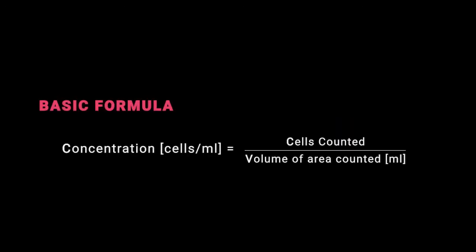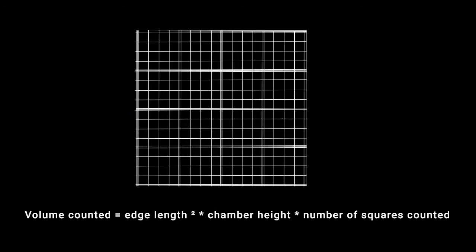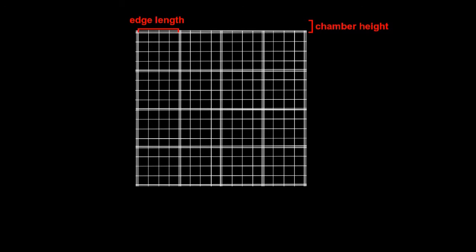The basic formula to determine concentration is dividing the number of cells counted by the volume in which the cells were counted. To calculate the volume, take the edge length squared and multiply it by the chamber height. Also, consider how many squares were counted. Be mindful not to make a mistake when converting the units. One square millimeter corresponds to one microliter or a thousandth of a milliliter.